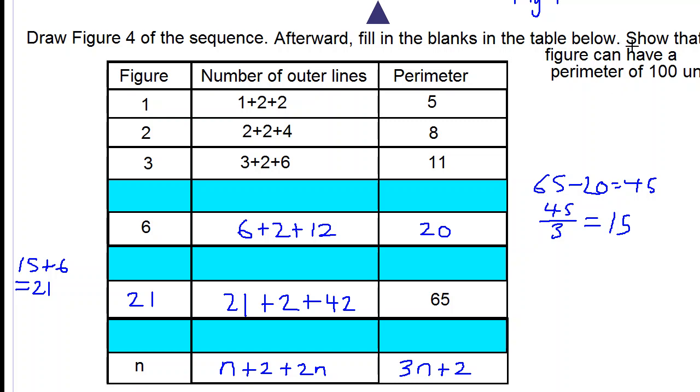Last part of the question, show that no figure can have a perimeter of 100 units, so if a figure has a perimeter of 100 units, then three n plus two would be equal to 100, so let's determine the number of this figure.